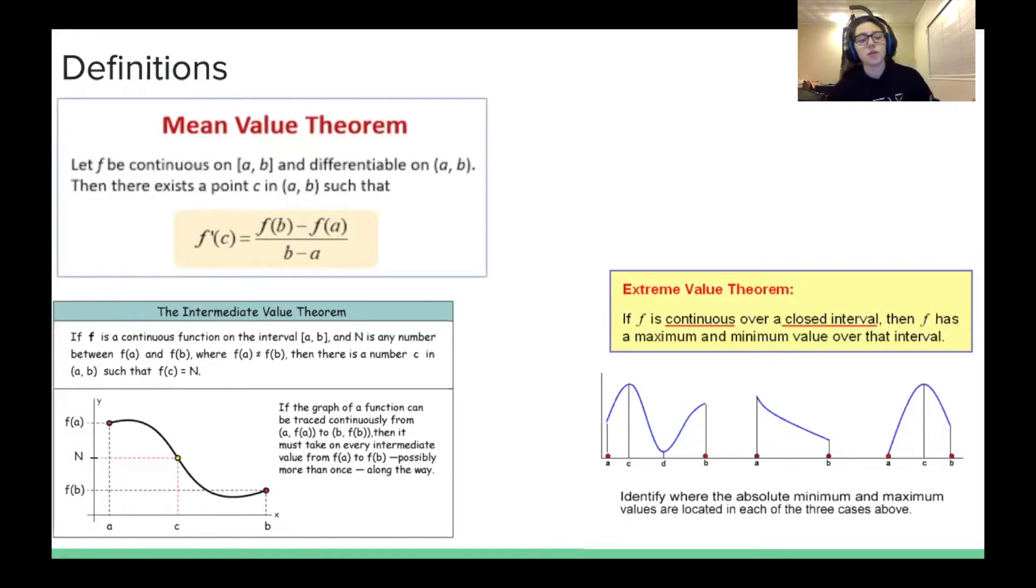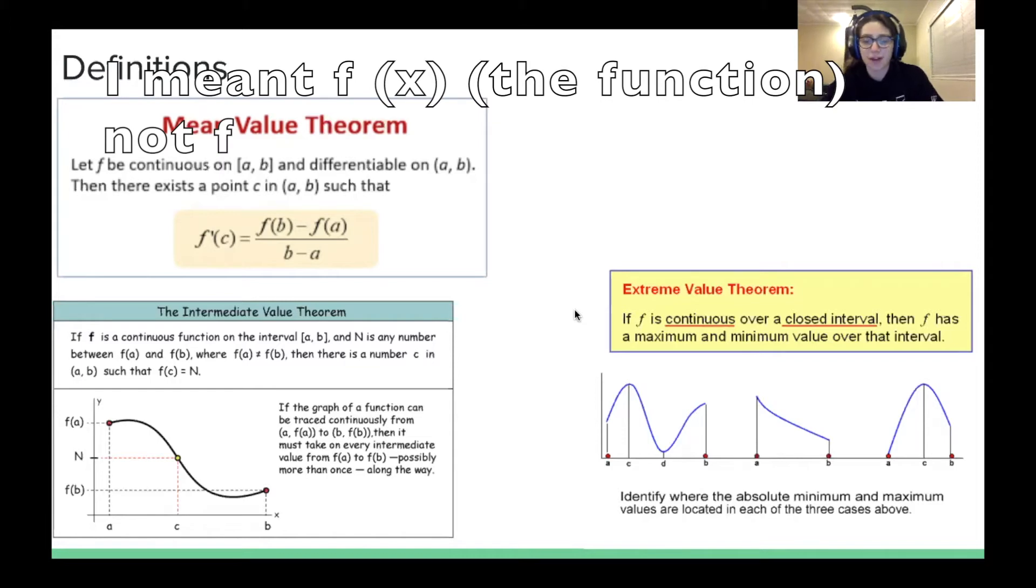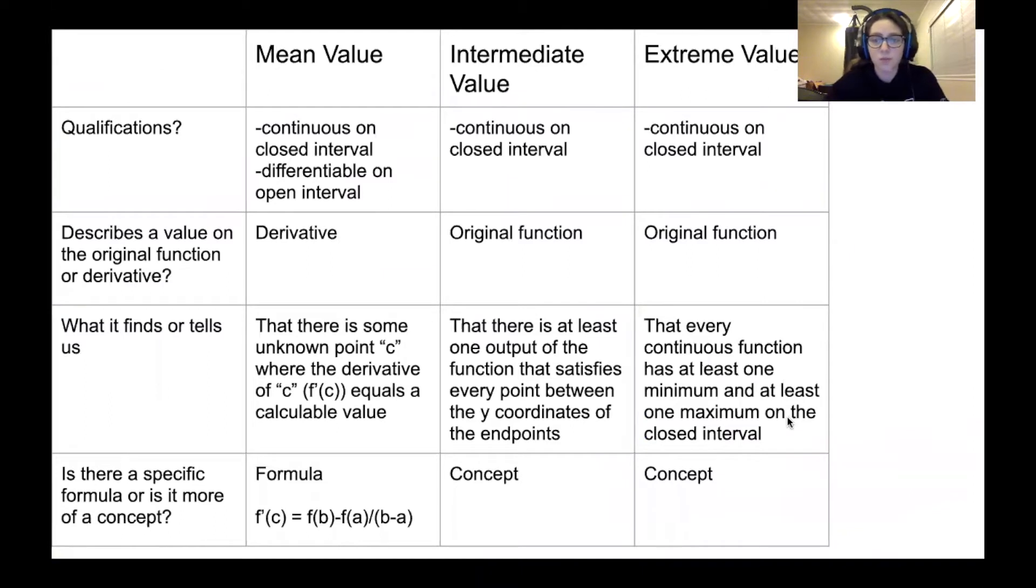Intermediate value theorem: for a continuous function on the interval from a to b, n is a number between f(b) and f(a), where f of whatever c value exists equals n. This image right here explains it in a little more detail. Then the extreme value theorem is just for a continuous function on a closed interval, the f has a maximum and minimum. So I made this table here. I'm going to run through it pretty quickly, but you can pause the video or take a screenshot if you want to understand it more in depth. But essentially, I'm just going to be explaining more in depth specific similarities and differences.